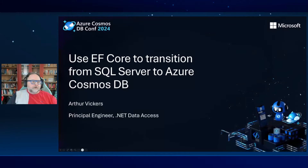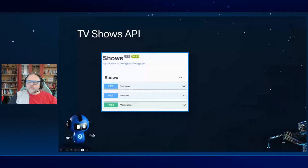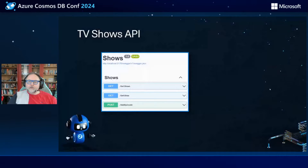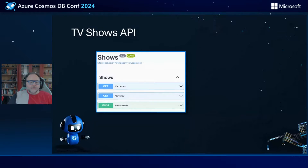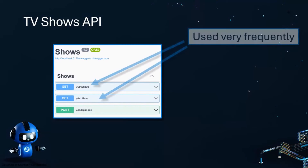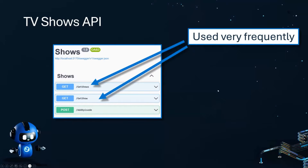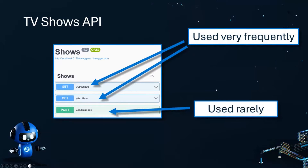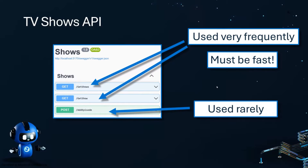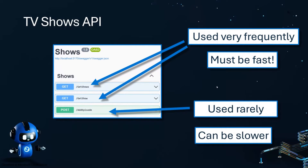The API we're going to try and transition here, I've trimmed it down to just the really important points. We've got two APIs: getShows and getShow. These ones are used very frequently, so we want those to be really fast. On the other hand, add episode is used only rarely compared to getShows and getShow, so it's okay if it can be slower — we may trade off performance there.